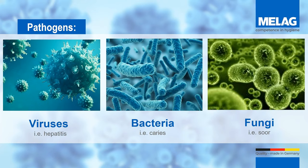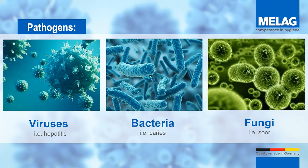Bacteria are the smallest unicellular microorganisms, which can be killed by corresponding drugs or detergents. More complex, on the other hand, are viruses, which do not have their own metabolisms and are therefore dependent on other cells to reproduce. Also, viruses cannot be killed, but only inactivated.